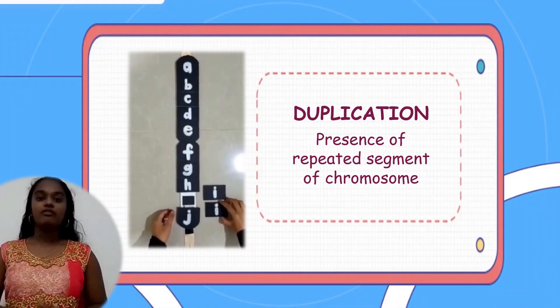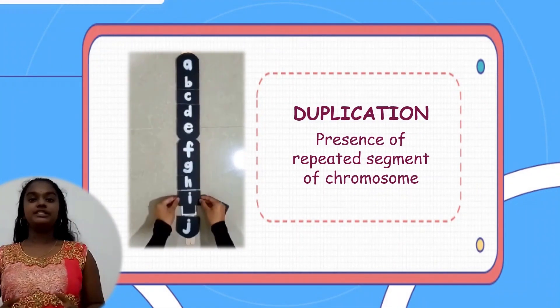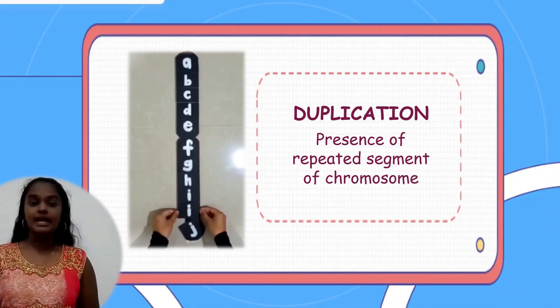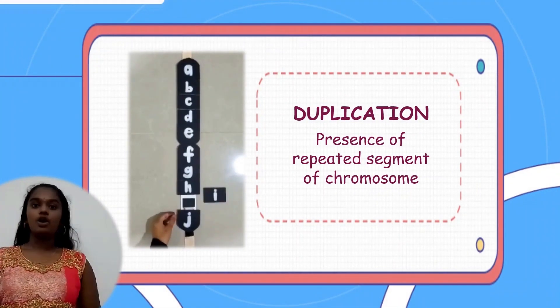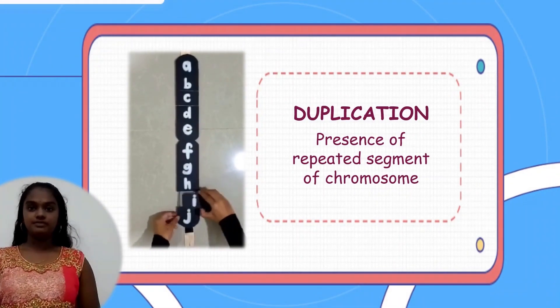When a segment of a chromosome is present more than once, then it is called duplication.